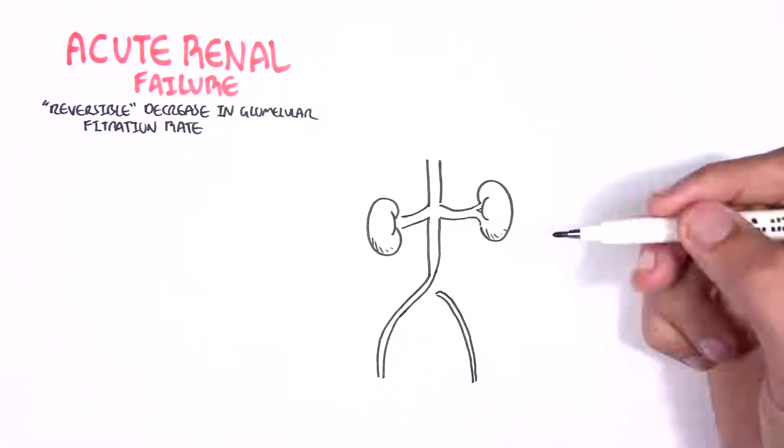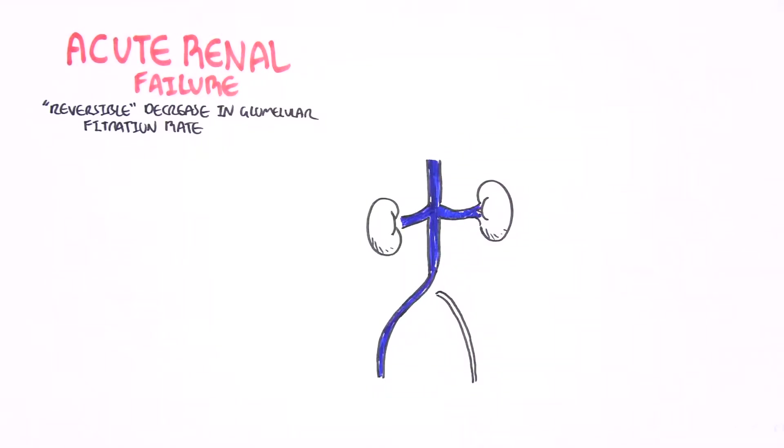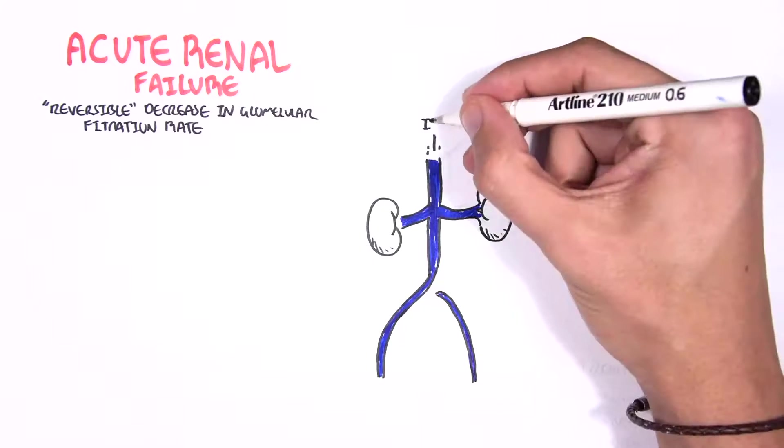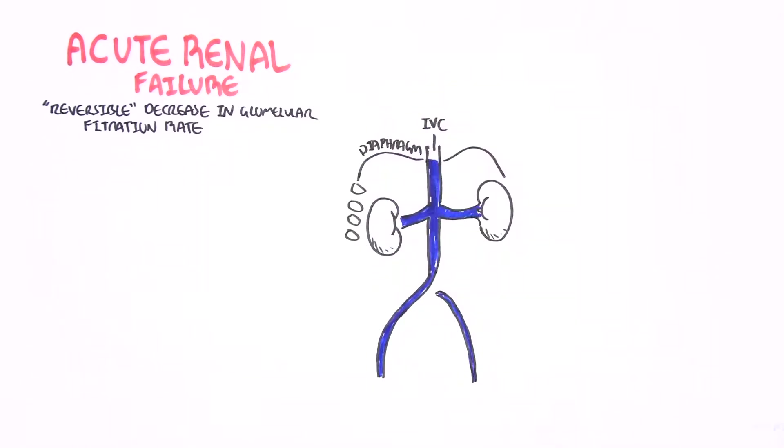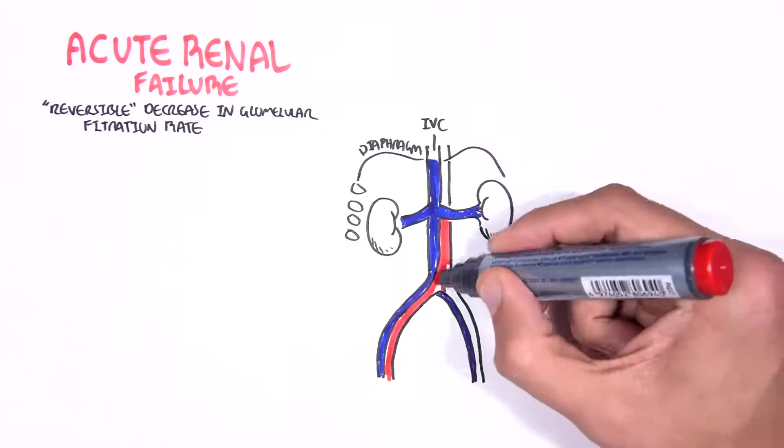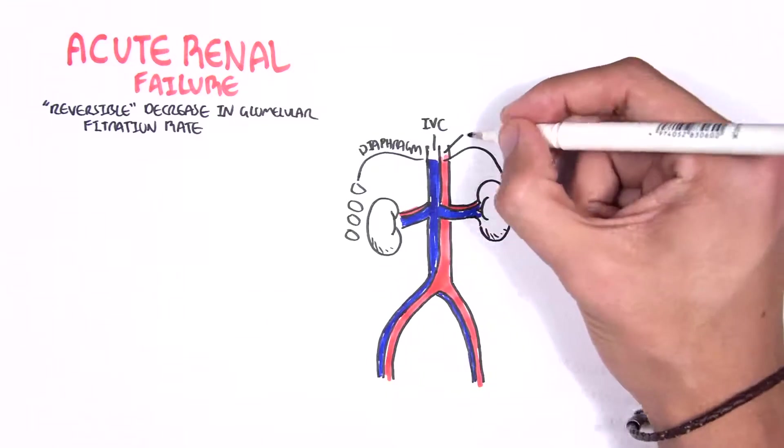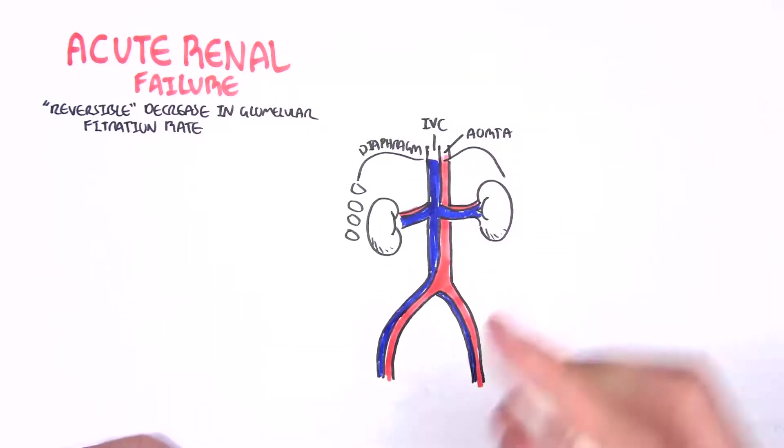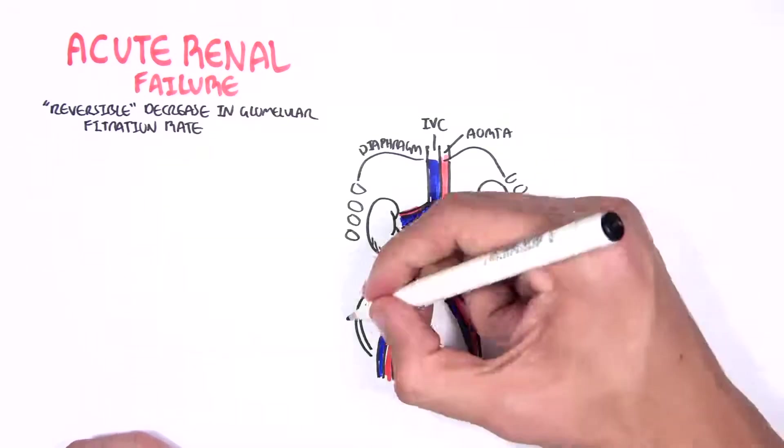Here I'm drawing the anatomy. We have the kidneys, the inferior vena cava where the renal veins drain into, and the ribs here. Here is the diaphragm, and here we have the aorta which will supply the kidneys through the renal artery.